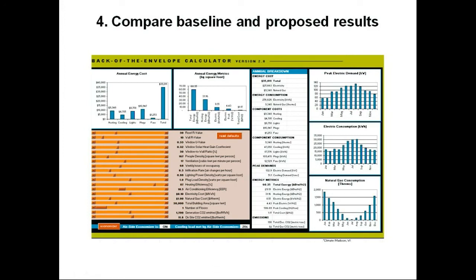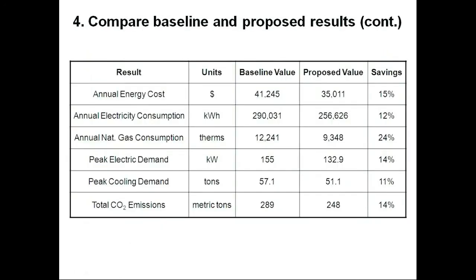We can also compare — not just qualitatively but quantitatively — the same results between the proposed and baseline cases. This table illustrates the baseline and proposed values for the annual energy cost. We have a decrease of 15%, or about $6,200 in savings from our host of measures. Annual energy consumption is reduced by 12%, and natural gas by 24%. So our measures affected natural gas consumption much more than electricity consumption, which is important in a cool climate like Madison. Our peak electric demand and peak cooling demand have both decreased, which could result in reducing the overall cost of initial equipment. And finally, our annual CO2 emissions have decreased by 41 metric tons.